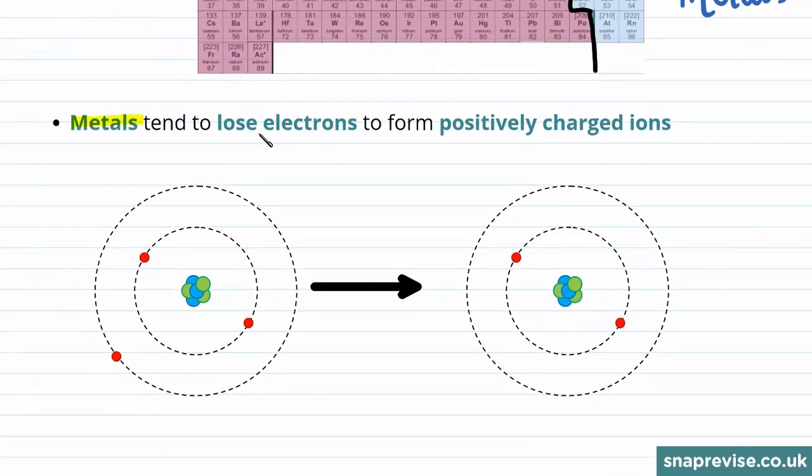What we see is that metals on the left-hand side of the periodic table tend to lose electrons in order to form positively charged ions.